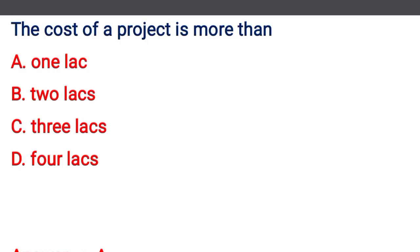Hello friends, welcome to our channel. Today we are going to see the MCQ related to construction planning and scheduling. The first question: the cost of the project is more than — option A: 1 lakh, option B: 2 lakhs, option C: 3 lakhs, option D: 4 lakhs.